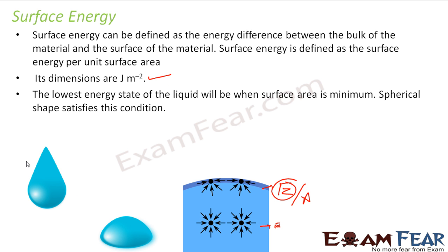Please note that the spherical shape is due to the lowest surface energy. The lowest energy state of a liquid corresponds to minimum surface area. If there are more molecules at the surface, the system has more energy, so the liquid wants to minimize the surface area. For a given volume, comparing cuboid, cylinder, and sphere, the sphere has the lowest surface area and thus the lowest surface energy.